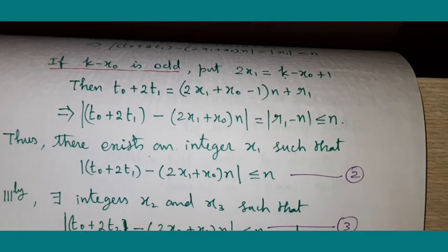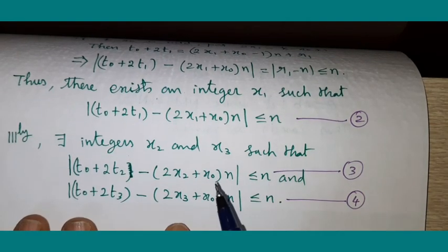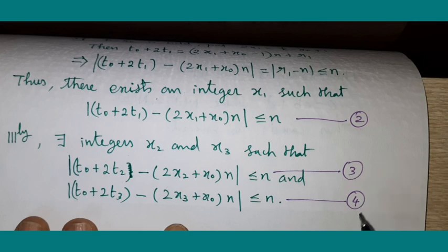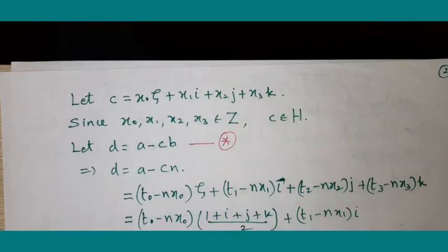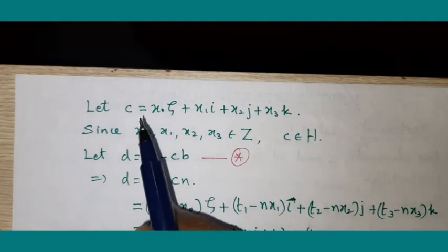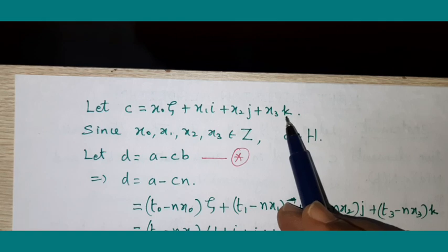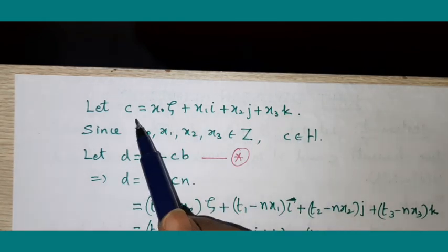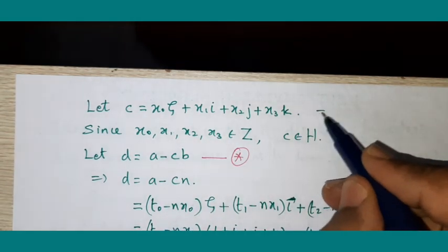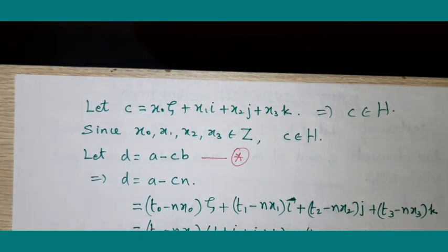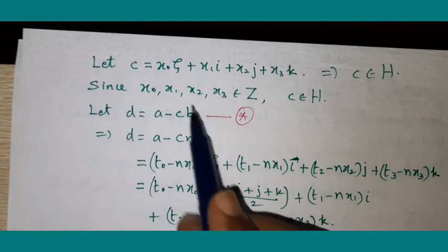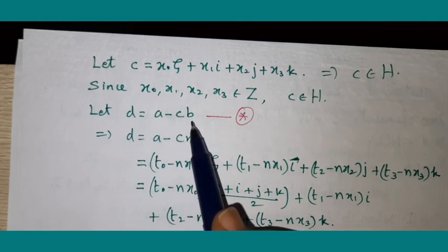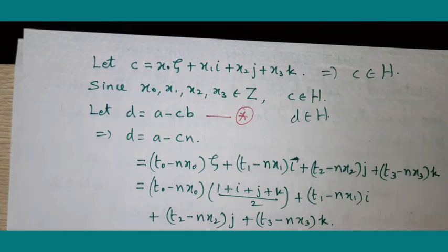In a similar way, we can also find integers X₂ and X₃ satisfying the corresponding conditions. So we take those as equations 3 and 4. We now have four equations giving us four integers: X₀, X₁, X₂, X₃, all integers. With these, we define a new element C = X₀ + X₁i + X₂j + X₃k. Since all coefficients are integers, C is an element of H, so C belongs to H. Now let us take A − CB as D. Because all these are in H, D is also an element of H.